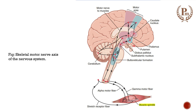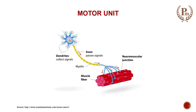Once the somatosensory system gives information to the cortex, the brain receives and processes it, then plans a decision. This decision is conveyed via descending tracts to the spinal cord and ultimately to the effector organ — which can be the muscle or a gland. This whole system forms our motor nerve axis. A very commonly asked question is: what is a motor unit?